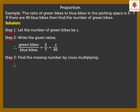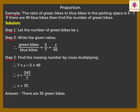Therefore, 7 into x is equal to 5 into 49. Therefore, x is equal to 245 upon 7. Therefore, x is equal to 35. Thus, there are 35 green bikes.